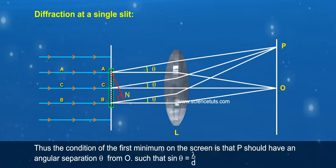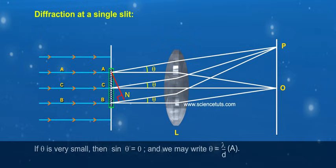If theta is very small, then sin theta equals theta, and we may write theta equals lambda by D.